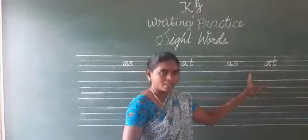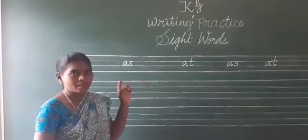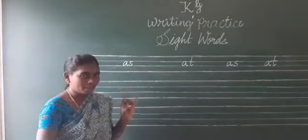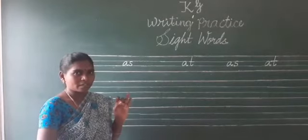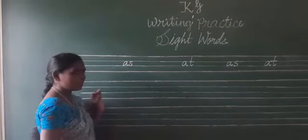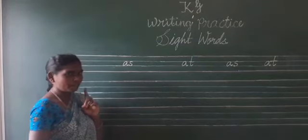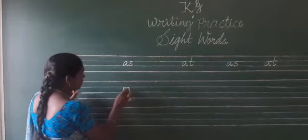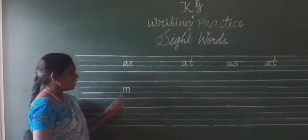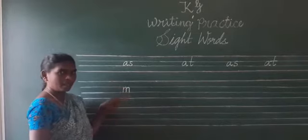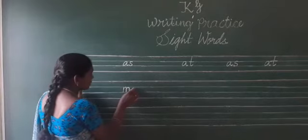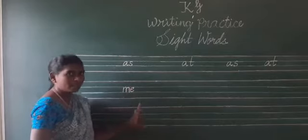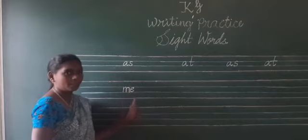Have you all written? Shall we go to the next word? The next word is ME. M, E — ME. The letter M and the letter E make the word ME. How to write M? A straight line, along the straight line draw two downward curves — this makes the letter M. Then write the letter E. M and E make the word ME.